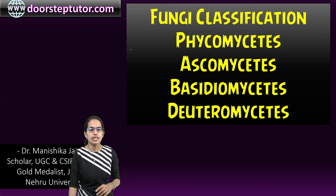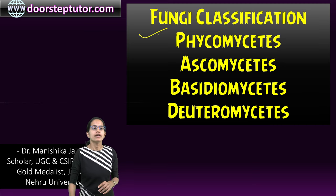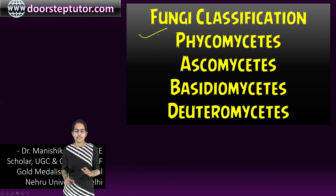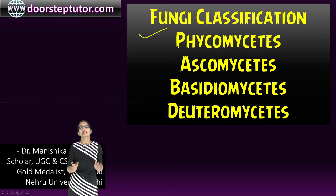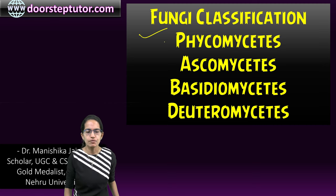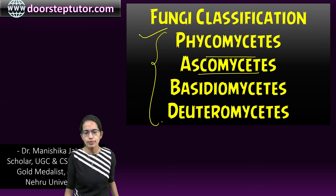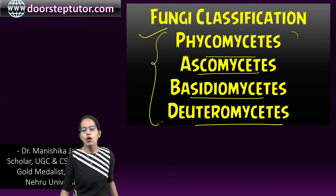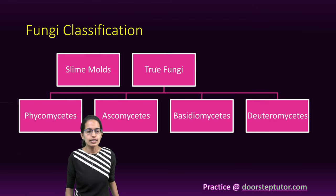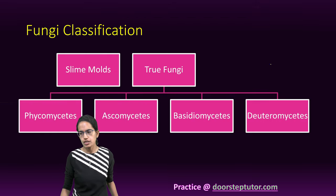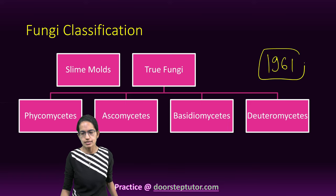Let's talk about the classification of fungi. Fungi can be classified into true fungi and the slime molds. True fungi can further be classified into Phycomycetes, Ascomycetes, Basidiomycetes, and Deuteromycetes. All of these are considered as true fungi. This classification was given by Martin in 1961.